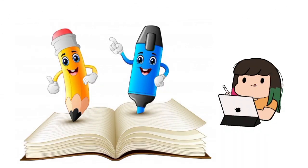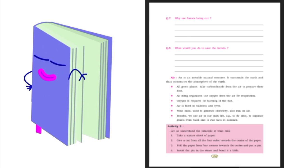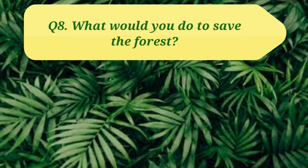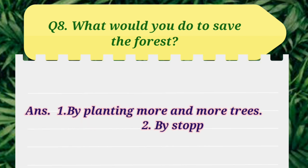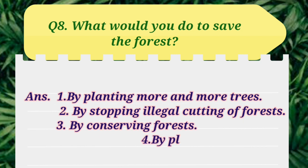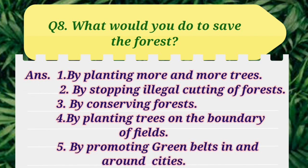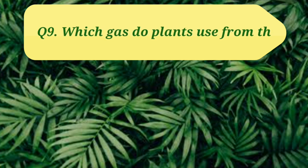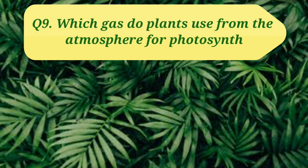Now let us do some practice questions from your book. Open your books at page number 158. Question number 8: What would you do to save the forests? Let's write the answer: By planting more and more trees; by stopping illegal cutting of forests; by conserving forests; by planting trees on the boundary of fields; by promoting green belts in and around cities.